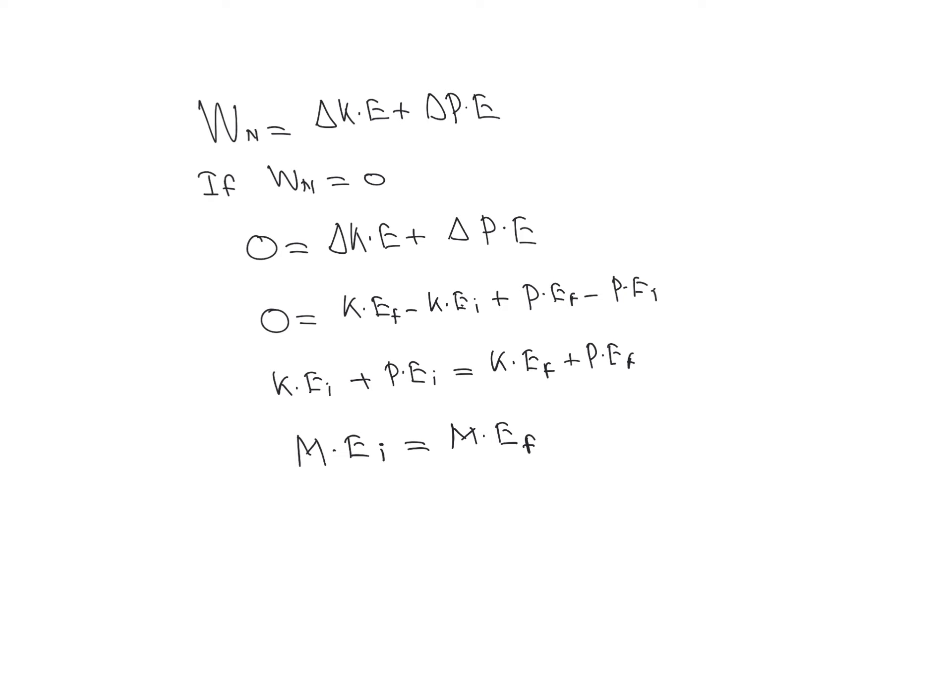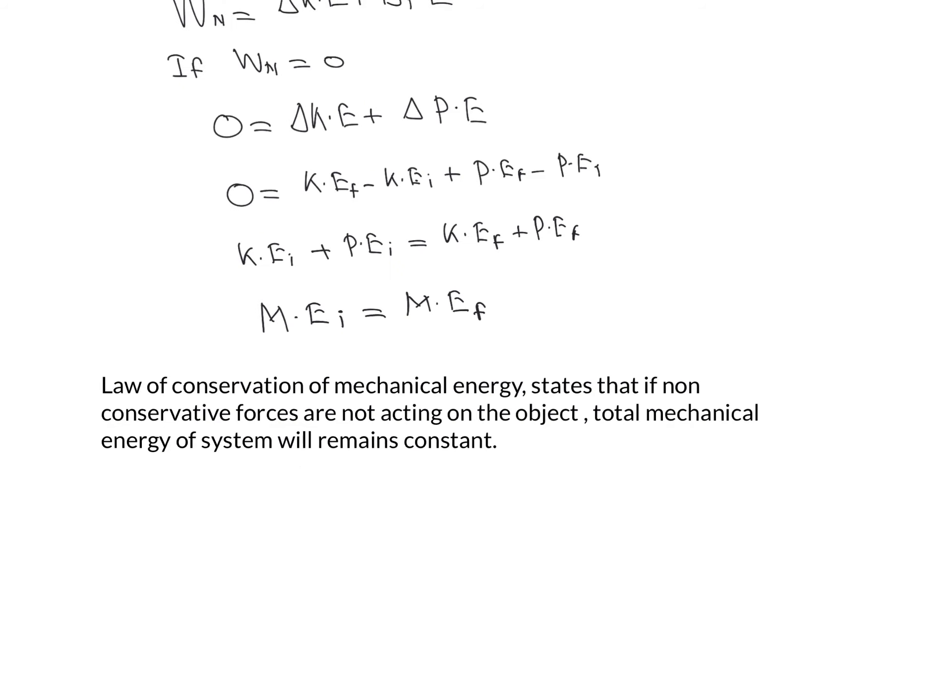The sum of kinetic energy plus potential energy is known as mechanical energy. So we can write: initial mechanical energy equals final mechanical energy. This is known as the law of conservation of mechanical energy, which states that if non-conservative forces are not acting, total mechanical energy of the system remains constant.